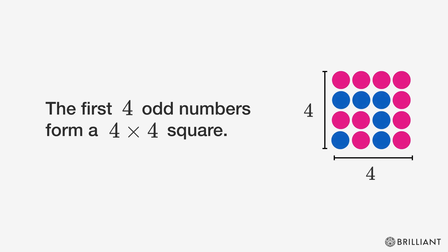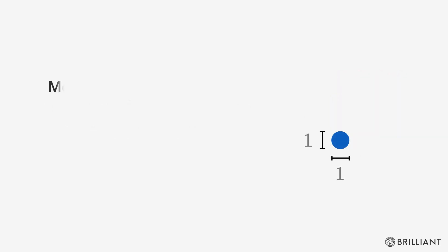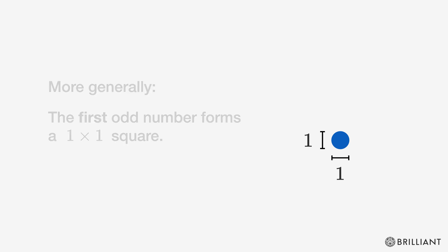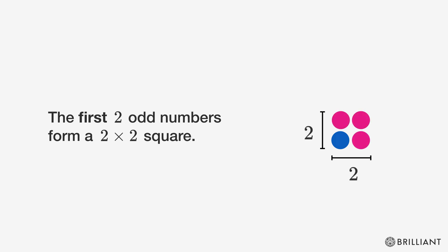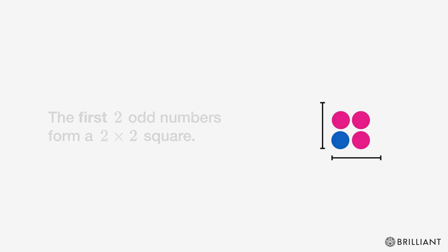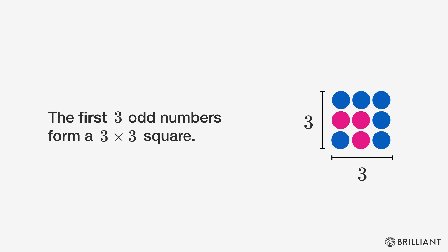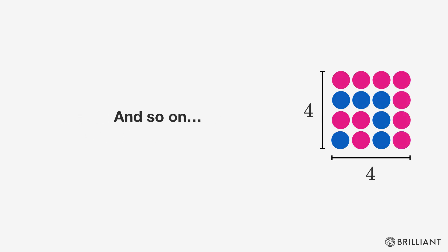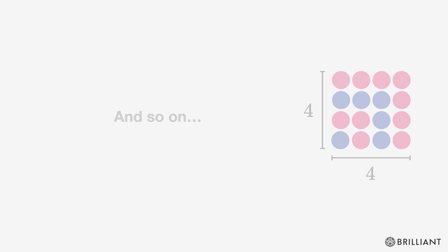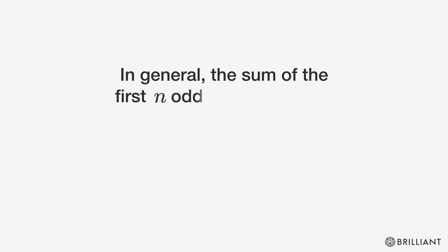The first four odd numbers form a 4 by 4 square. More generally, the first odd number forms a 1 by 1 square, the first two odd numbers form a 2 by 2 square, the first three odd numbers form a 3 by 3 square, and so on. In general, the sum of the first n odd numbers is n squared.